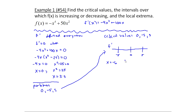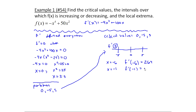Picking x equals minus six: f prime of minus six equals positive 264. So we're positive on this side of minus five. Between minus five and zero, I'll use x equals minus one. f prime of minus one equals minus 96, so we have a negative value here. Since f prime is continuous on this interval, everything between minus five and zero will be negative when plugged into f prime.